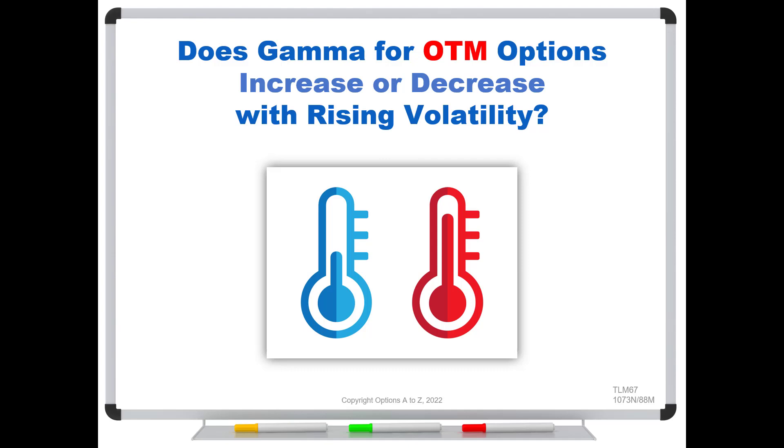This is a good question because a lot of strategies thrive under rising volatility, and traders say, well, if that's true, I would like to get more and more gamma. And typically, traders will hear that your gamma will increase for out-of-the-money options. But is that always going to be true, or is it only true for a short while?